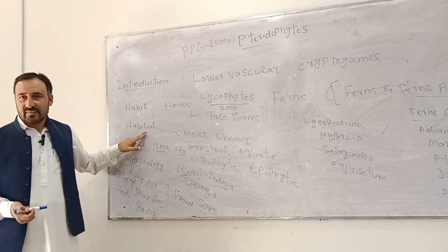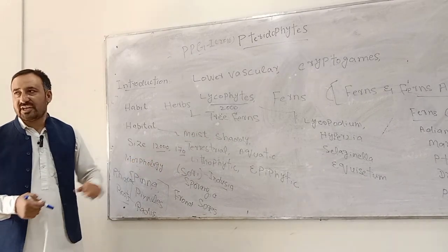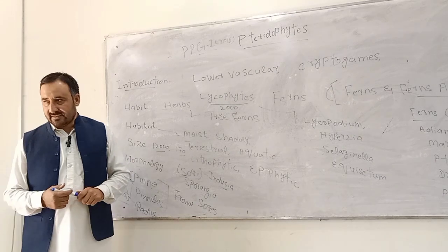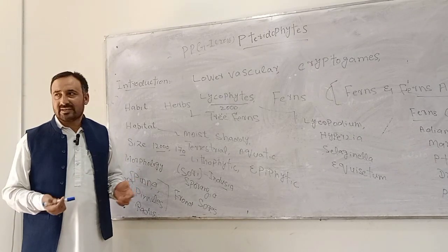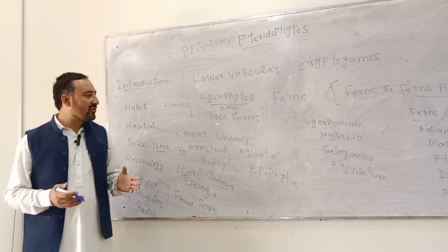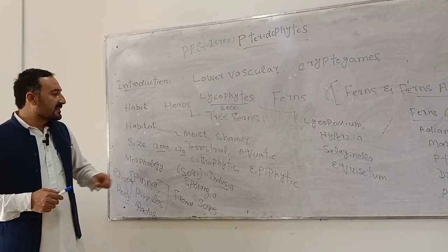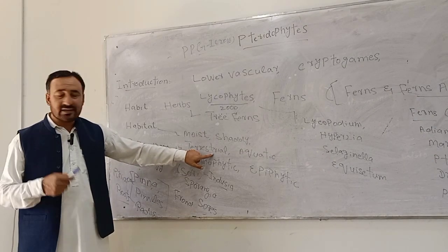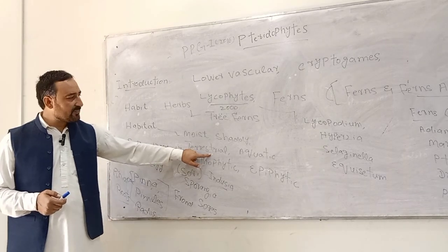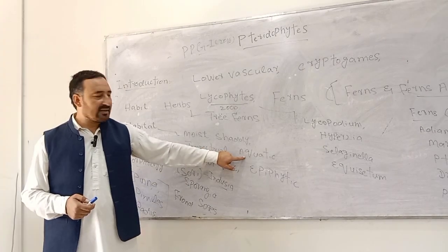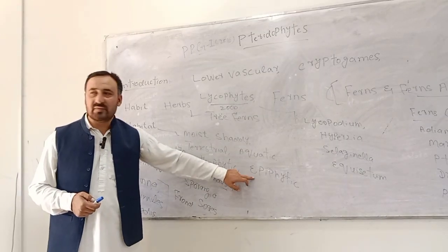Regarding habitat, pteridophytes are mostly found in moist and shady places, near ponds, pools, wet and shady places, and are mostly dominant in moist temperate forests. Regarding habitat, they can be found as terrestrial, also aquatic, some are lithophytic, while some are epiphytic. There is a huge diversity in them regarding habitat.